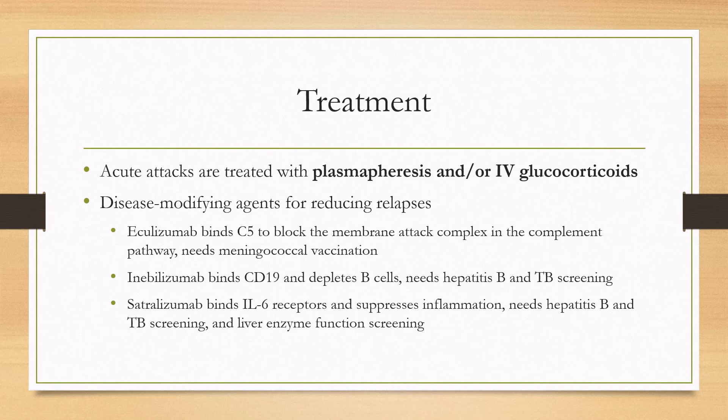Inebilizumab binds CD19 and depletes B cells, and requires hepatitis B and tuberculosis screening. Satralizumab binds IL-6 receptors and suppresses inflammation through the IL-6 pathway, and also requires hepatitis B and tuberculosis screening as well as liver enzyme function testing.